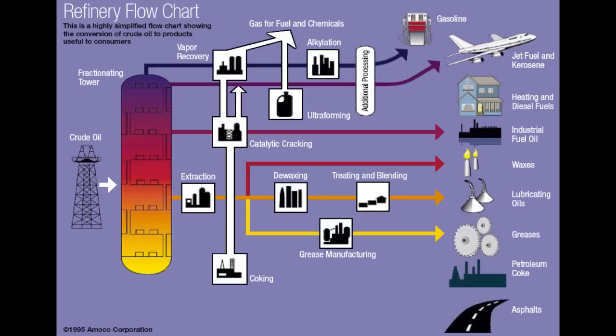We are now at the bottom of the vacuum distillation column. The vacuum distillation residue can do various things. First is coking — a very severe thermal cracking process which leads to petroleum coke as a byproduct. Refineries use coking to produce more jet fuel, gasoline, and LPG.